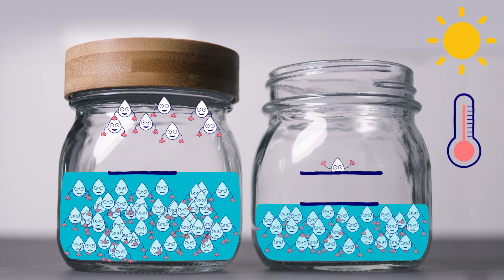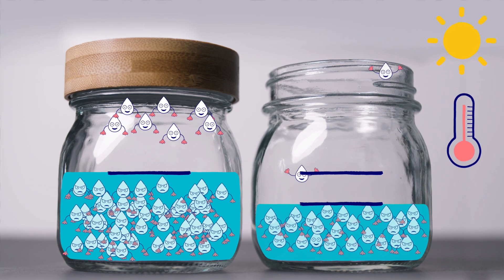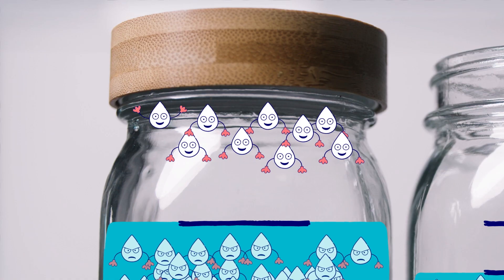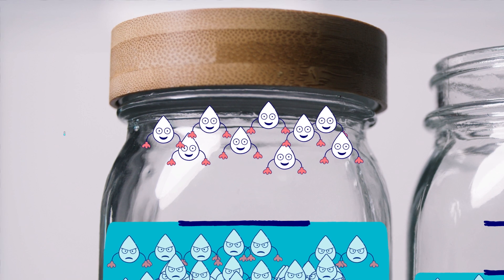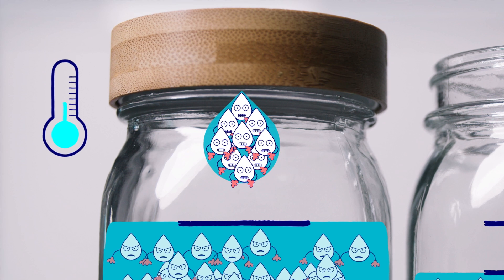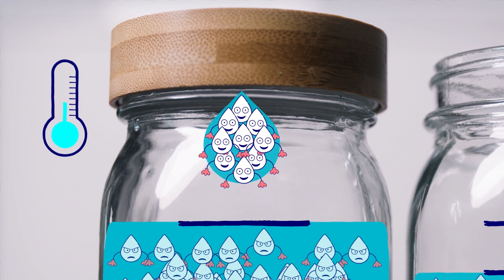But what's happened to the water in the covered jar? It was in the sun too, so why didn't the water level drop? The covered jar has a lid preventing the rising water vapour from escaping. When the vapour cools, the molecules stick together, forming water droplets at the top of the jar. This is called condensation.